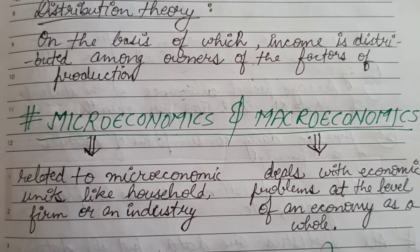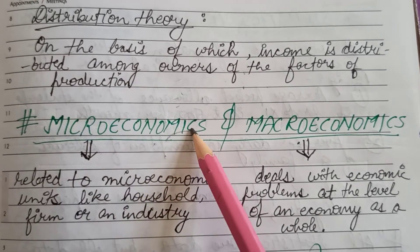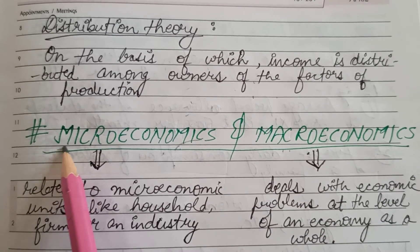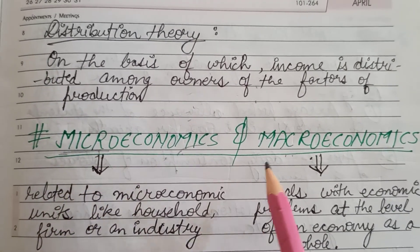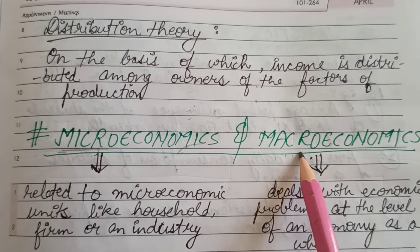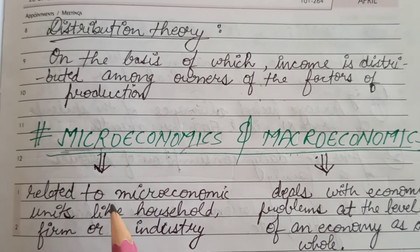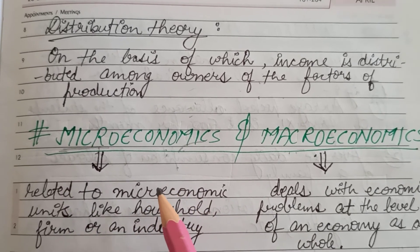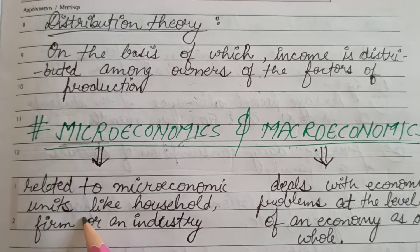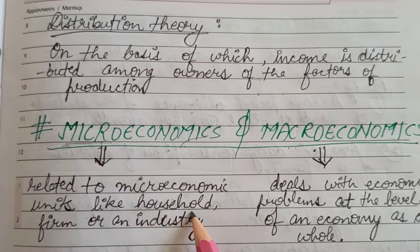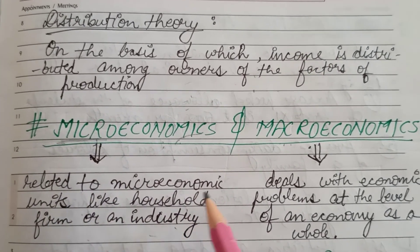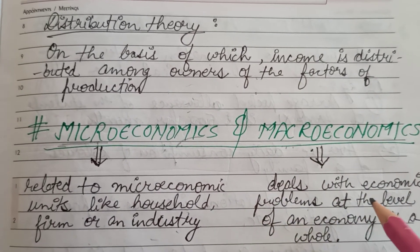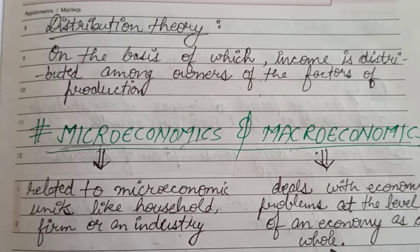Next comes the difference between microeconomics and macroeconomics. The term 'micro' relates to the small and 'macro' relates to the large. Microeconomics deals with the economic problem at the level of microeconomic units, which involves the household, firm, or an industry. On the other hand, macroeconomics deals with the economic problems at the level of an economy as a whole.